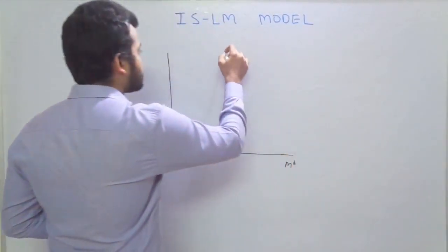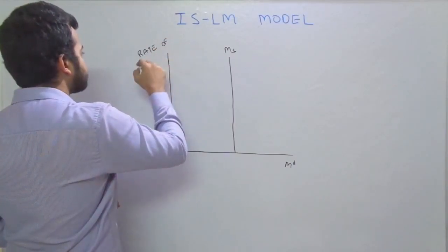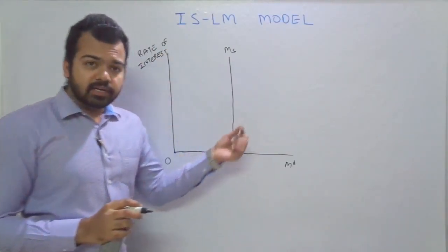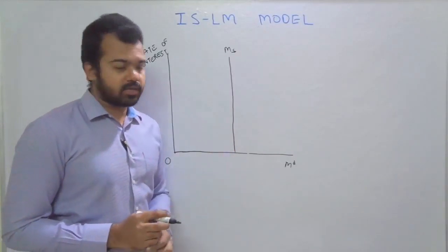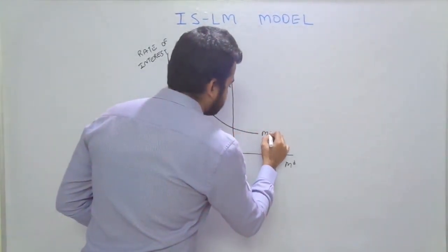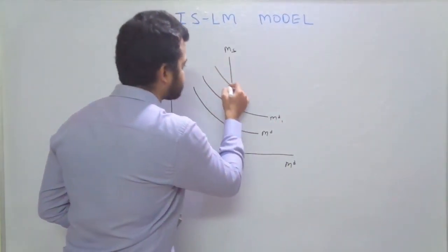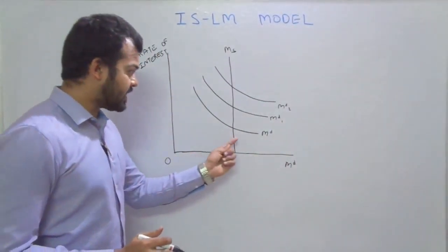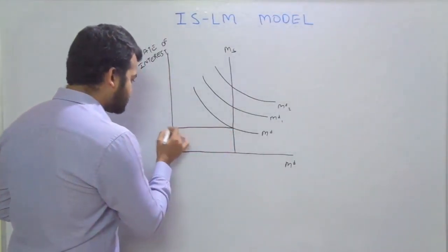In the diagram, we have money demand and money supply on the x-axis, and the rate of interest on the y-axis. The money supply curve is vertical because it is fixed by the central authority. In every country, the central bank fixes the money supply in the economy — that is why it is vertical and cannot change easily. We have a family of money demand curves: money demand curve, money demand one, and money demand two.